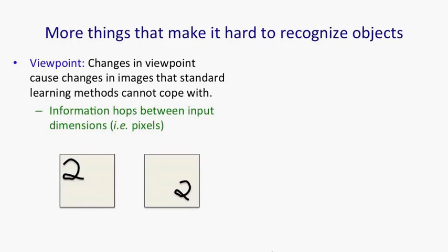The problem is that information hops about between the input dimensions. So typically in vision, the input dimensions correspond to pixels. And if an object moves in the world and you don't move your eyes to follow it, the information about the object will occur on different pixels. That's not the kind of thing we normally have to deal with in machine learning.